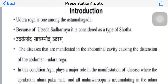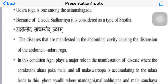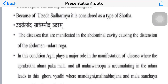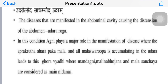Udhar-roga is one among the Ashtang Mahagad. Because of Utsed, it is considered as a type of Sotha. The diseases that are manifested in the abdominal cavity causing distension of the abdomen are called Udhar-roga. In this condition, Agni plays a major role in the manifestation of disease, where Apakrutha Ahar, Paak, Mal and all Malvaha-srotas accumulating in the Udhar leads to this Ghor-vyadi. Mandagni, Malin-bhojan and Mal-sanchai are considered as main Nidanas.